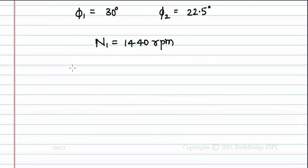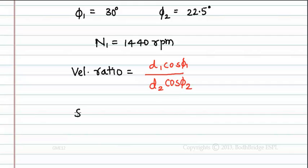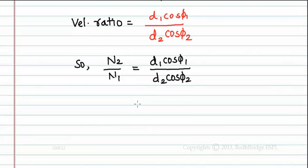We know in helical gears the velocity ratio is equal to D1 cos φ1 by D2 cos φ2. So N2 by N1 is equal to D1 cos φ1 by D2 cos φ2.